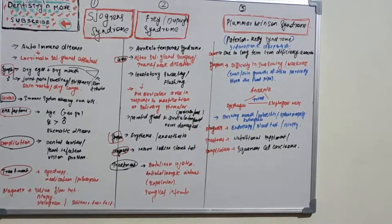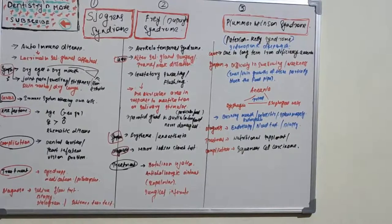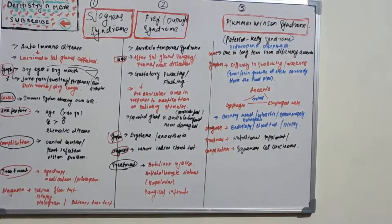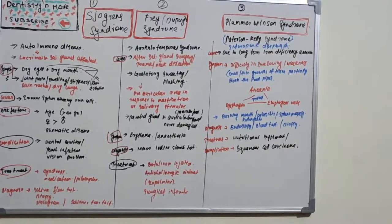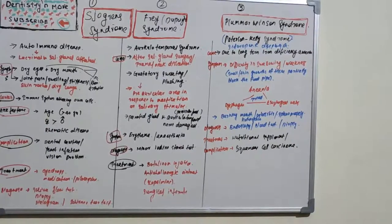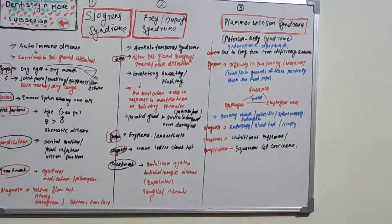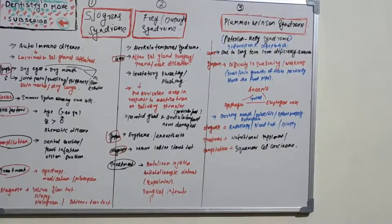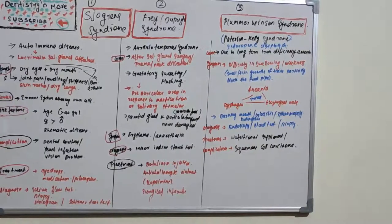Women are more prone to Sjögren's syndrome compared to men, and rheumatic disease is a common risk factor. Symptoms include skin rashes, dry cough, stiffness and swelling. It can also affect the thyroid, kidneys, liver, lungs, skin, and nerves — most organs can be affected by this autoimmune disease.